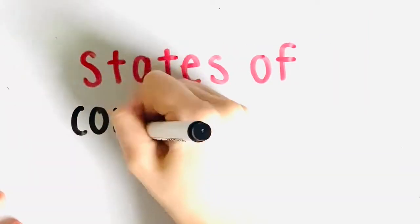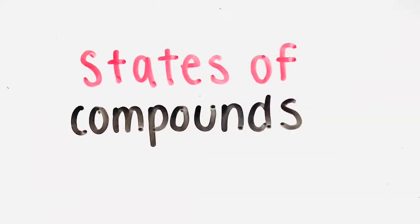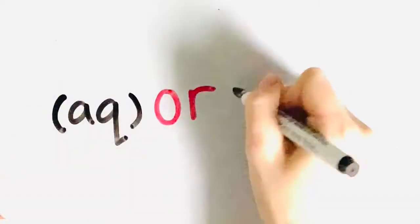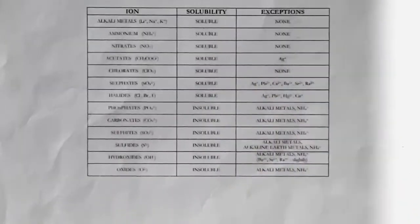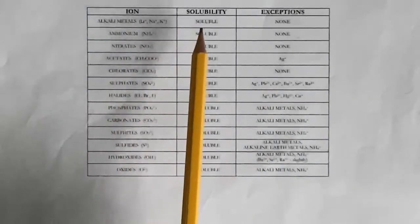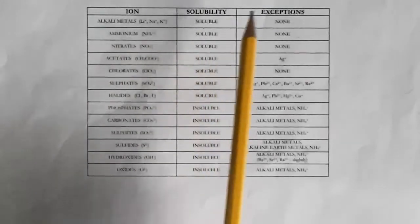Now, how do we find the states of compounds? Compounds are either aqueous or they are found as a solid, usually a solid precipitate. You can figure out the state by using the solubility rules. Looking at the table, you can see that there are three sections: the ions, their solubility, and their exceptions.